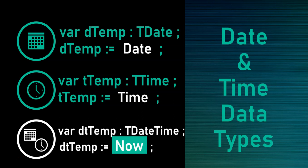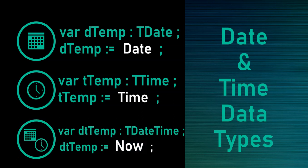If you used Now on a TDate variable it would still work — it would just store the date. The same for a TTime variable if you used Now on it. So Date, Time, and Now are the functions we use most often to get the current date, time, or date and time.